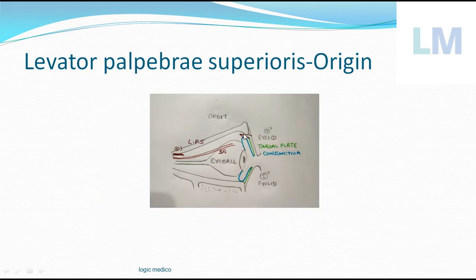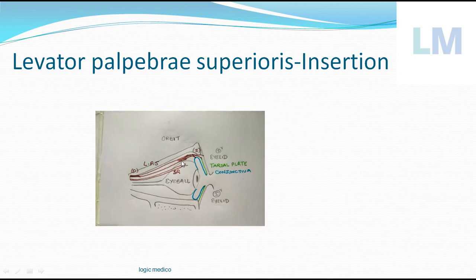The three laminas represent the insertion. The superficial lamina goes to the skin of the eyelid. The intermediate lamina goes to the tarsal plate. The deep lamina goes to the conjunctiva — more specifically, the superior conjunctival fornix. So the muscle, levator palpebrae superioris, inserts into the skin of the eyelid, the tarsal plate of the eyelid, and the palpebral conjunctiva with the fornix. That is the origin and insertion of the levator palpebrae superioris.